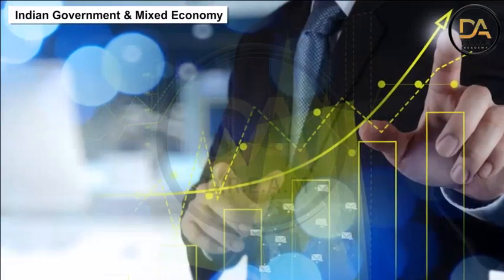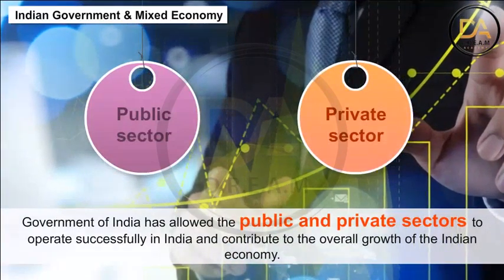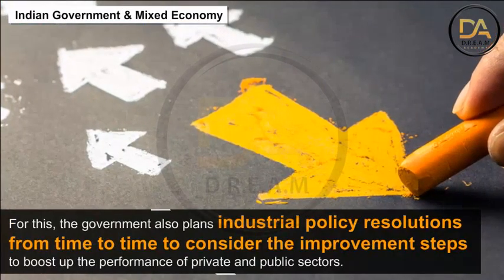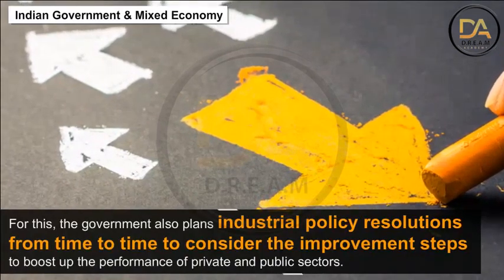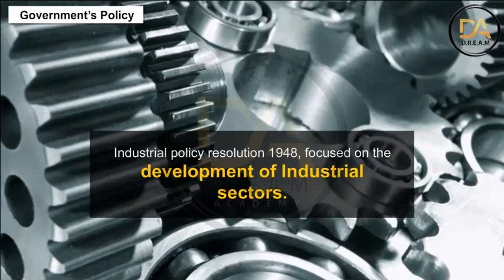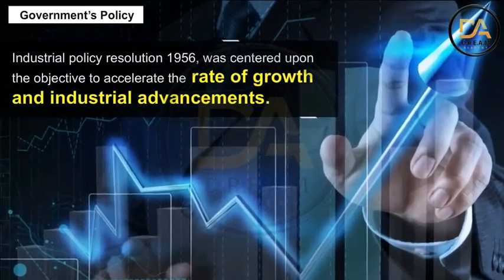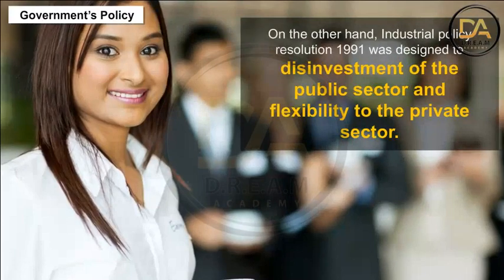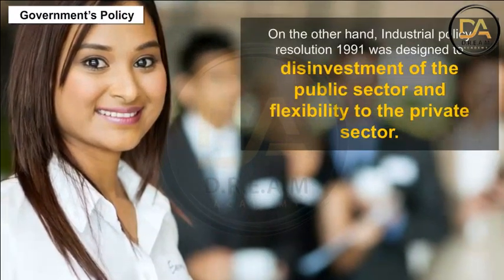Indian government and mixed economy. The Government of India has allowed the public and private sectors to operate successfully in India and contribute to the overall growth of the Indian economy. For this, the government also plans industrial policy resolutions from time to time to consider improvement steps to boost up the performance of private and public sectors. Industrial policy resolution 1948 focused on the development of industrial sectors. Industrial policy resolution 1956 was centered upon the objective to accelerate the rate of growth and industrial investments. Industrial policy resolution 1991 was designed for disinvestment of the public sector and flexibility to the private sector.